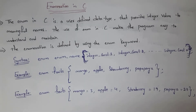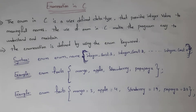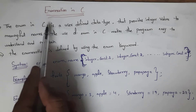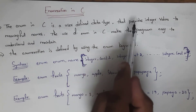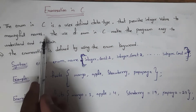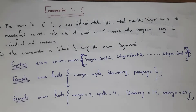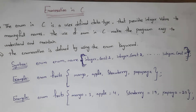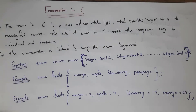Welcome to my channel. In this video I will be covering the enumeration data type in C. I have uploaded complete PPS subject tutorials — I will provide a link in the description. The enumeration in C is a user-defined data type that provides integer values to meaningful names. Whatever names we give, the enumeration data type will convert those names into integer values. It is easy to maintain and understand the program.